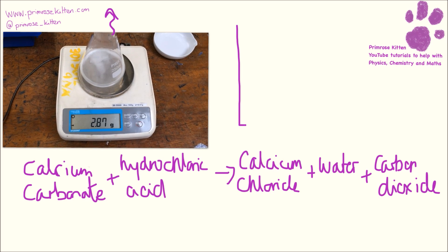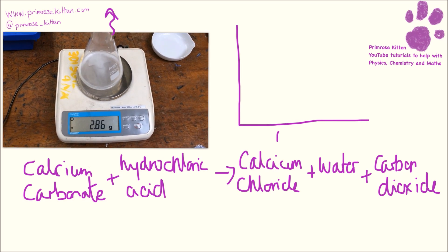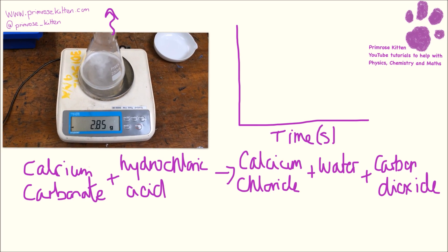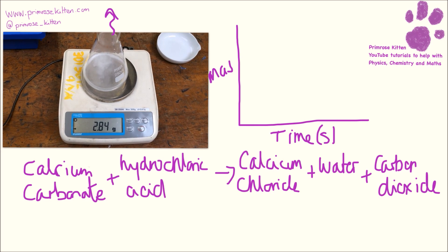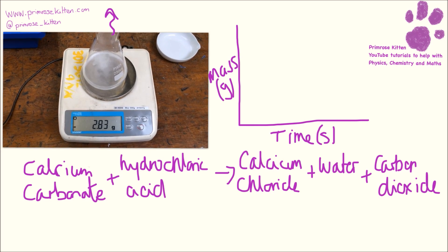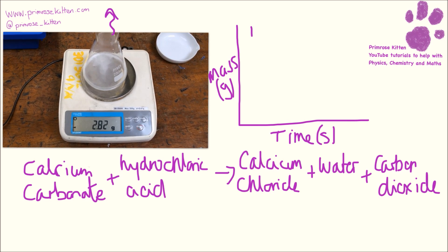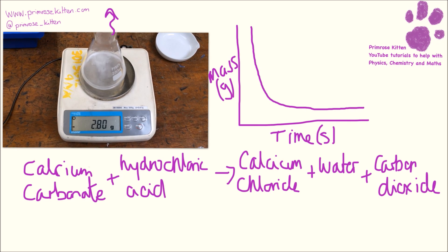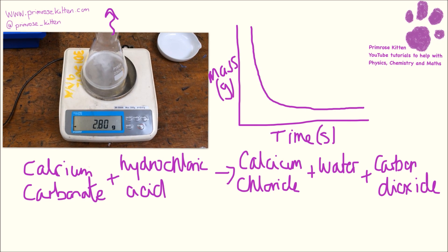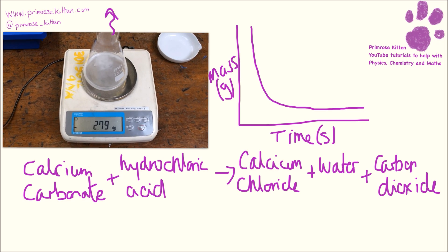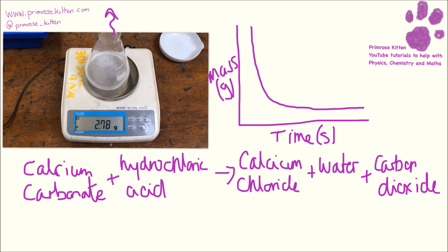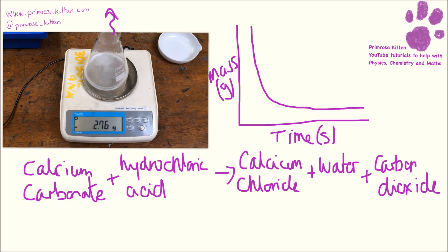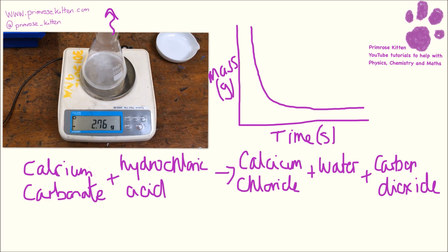If you were to draw a graph of this experiment, we would have time along the bottom in seconds and mass up the side in grams. The line will go down initially very, very quickly, and then after a while it would start to level off. When it starts to level off, that's because all of the reactants have been used up — there's no calcium carbonate left and no hydrochloric acid left, so the reaction comes to a stop.